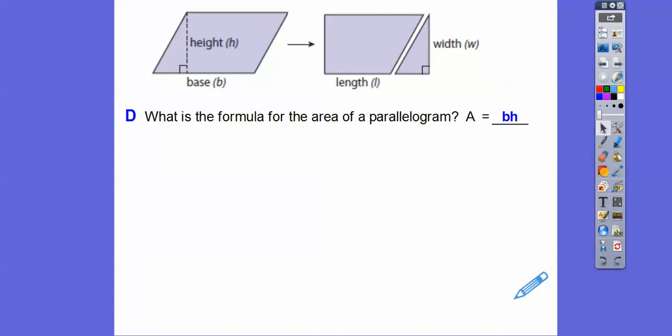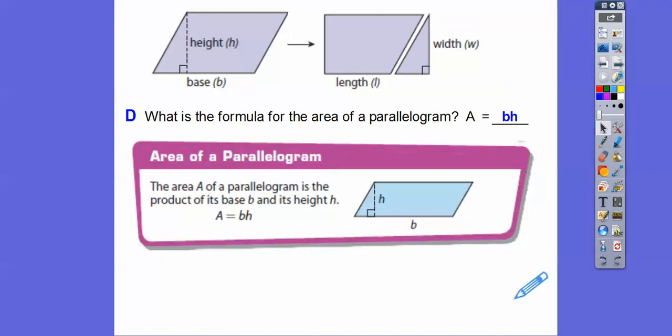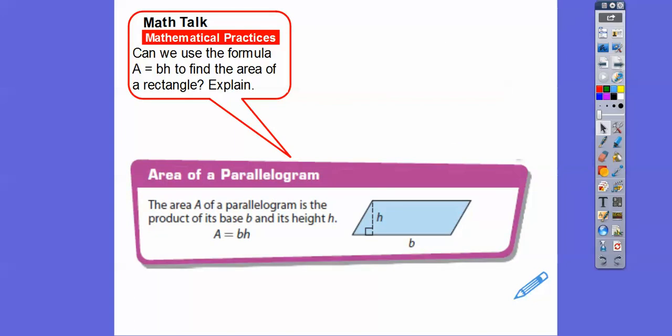If they give you the base and the height, we just multiply them just like the rectangle — base times height. The area of a parallelogram is the product of its base and its height. Product is a fancy name for multiply. And anything with area, we end our answers in square units. So if it has inches, we say inches squared; meters would be meters squared. Can we use the formula area = BH to find the area of a rectangle? Yes.